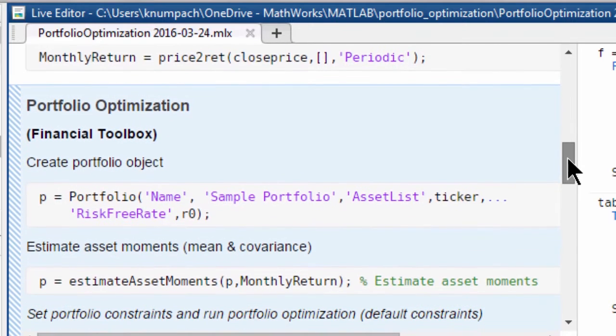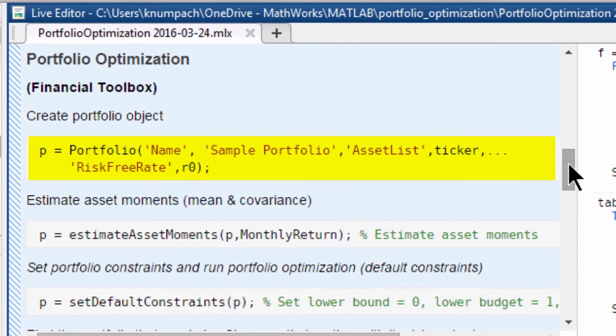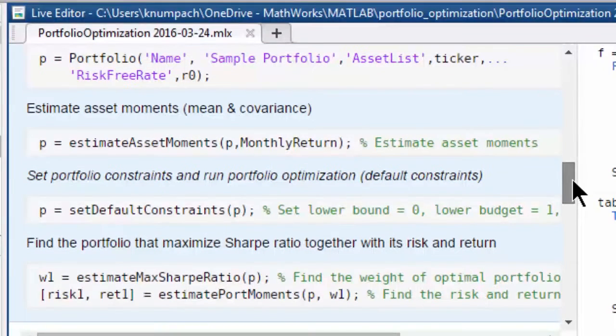Next is portfolio optimization process. First, we defined P as a portfolio with all tickers that we created earlier. Now we can estimate means and covariance of all assets in the portfolio by using just one line of code. I'm going to set a default constraint such that you can't short the asset and you have to invest 100 percent of your money, nothing more and nothing less.